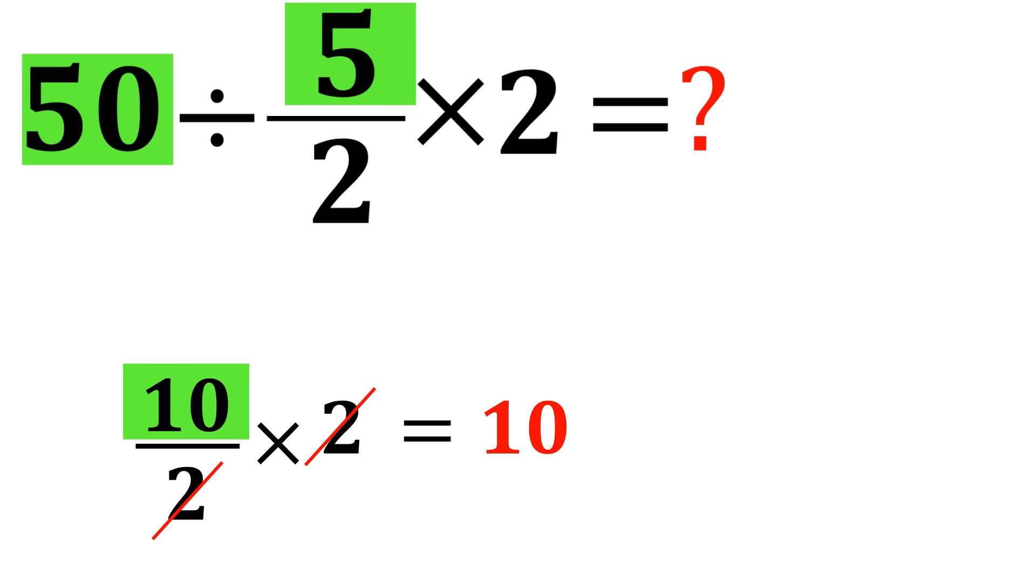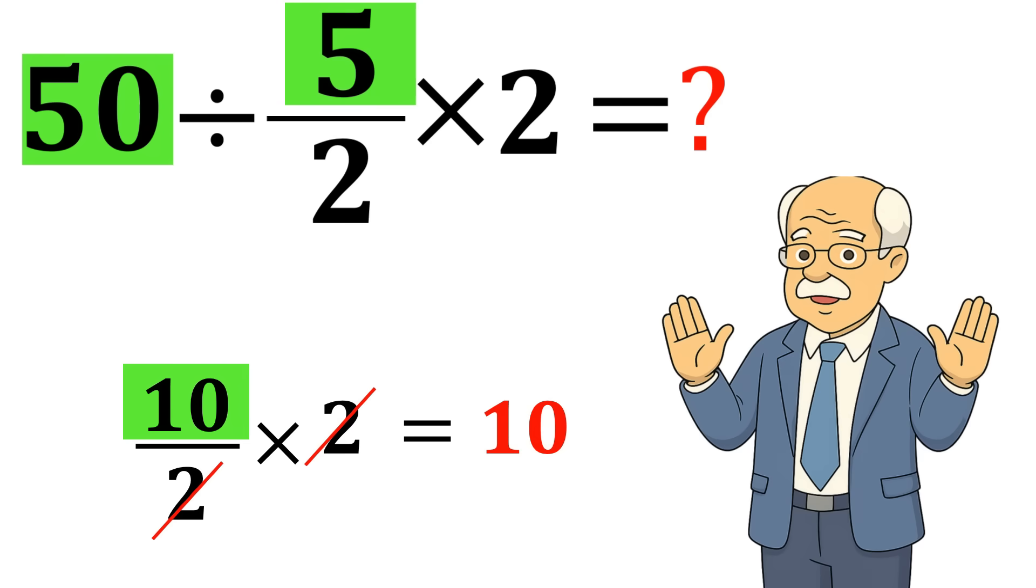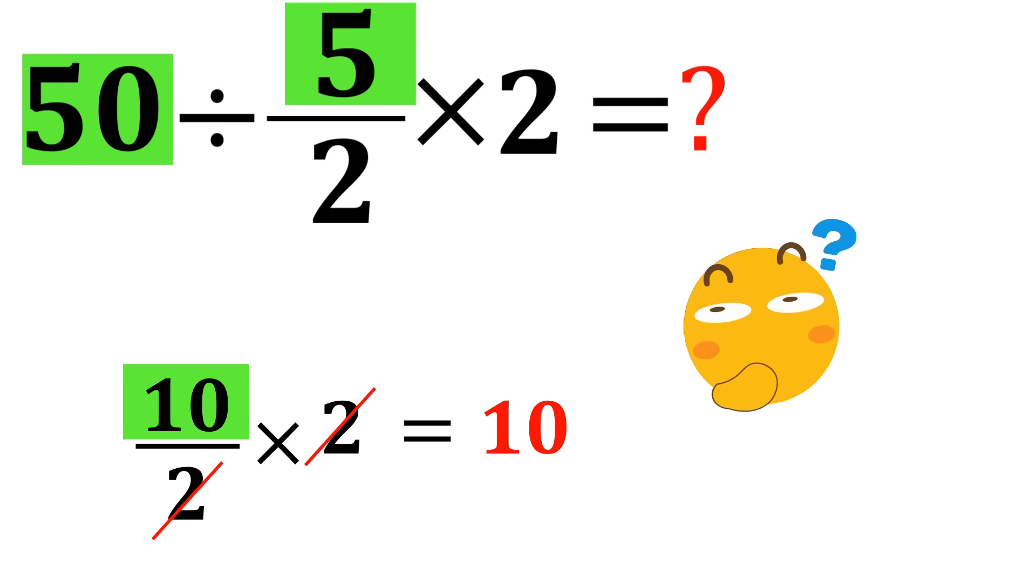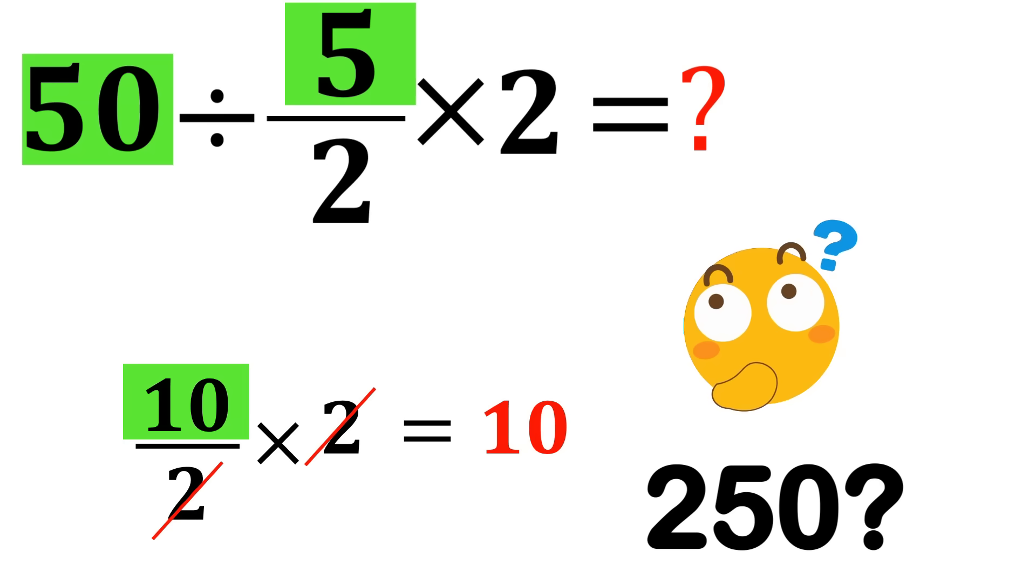Different path, same incorrect destination. The problem is math doesn't follow good feelings—it follows strict order of operations. So if 10 is wrong, what is the correct answer? 40, 250?